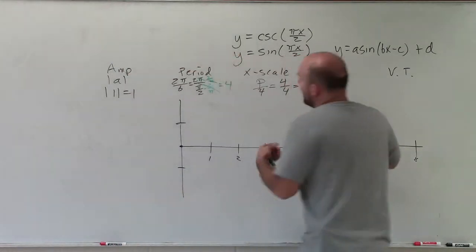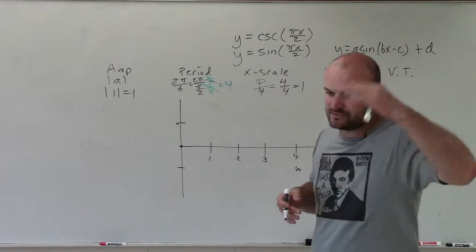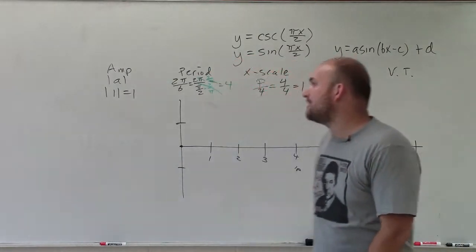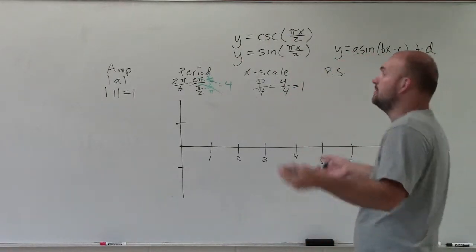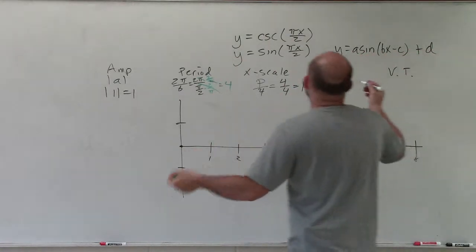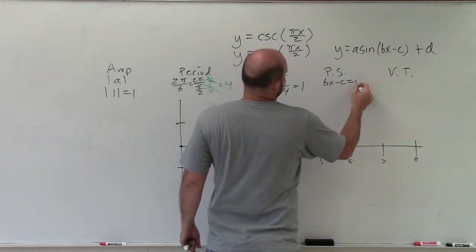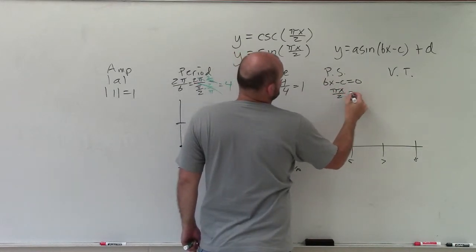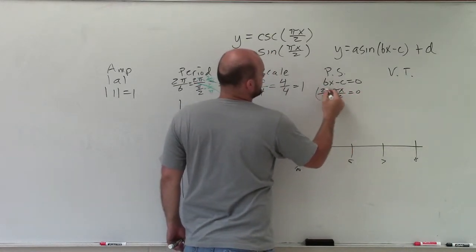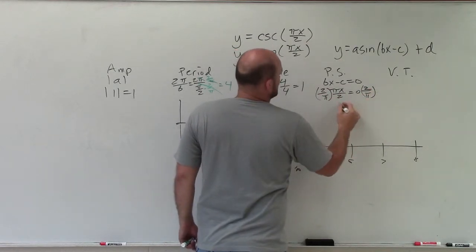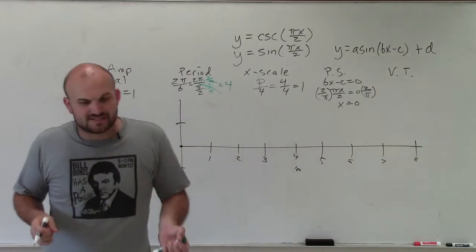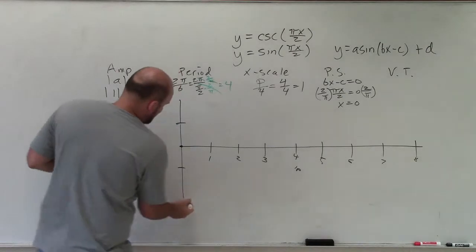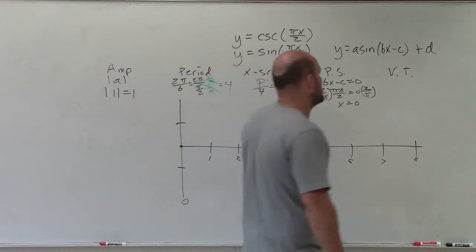Phase shift tells us how the graph is going to shift left or right. These are continuous graphs — they keep going on forever — but we like to start with the initial period at 0 and see if it shifts left or right. To find that, we take bx minus c equal to 0 — set what's inside the parentheses equal to 0. So π x divided by 2 equals 0; multiplying by the reciprocal, anything times 0 is 0. Therefore, my phase shift is 0, which is where I start.